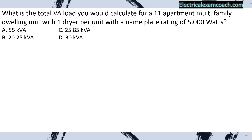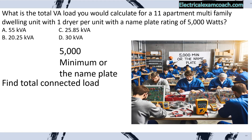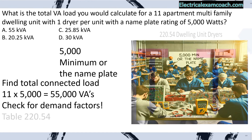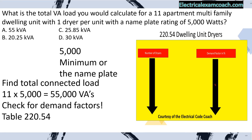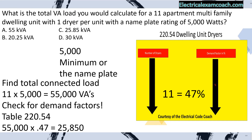What is the total VA load for an 11-apartment multifamily dwelling with one dryer per unit and a nameplate rating of 5,000 watts? We find our total connected load: 11 units multiplied by 5,000 equals 55,000 VAs. We then check table 220.54 and find the demand factor for 11 dryers is 47%. We take our original load multiplied by 0.47, giving us a new reduced load of 25,850 VAs. Answer: C.